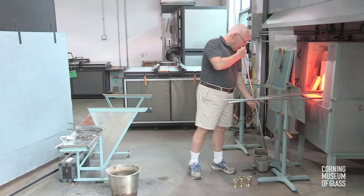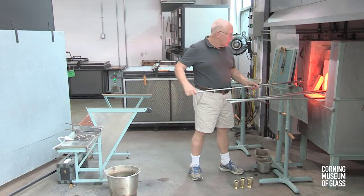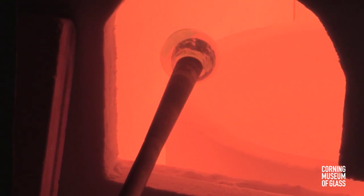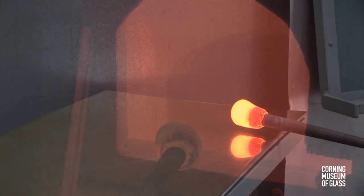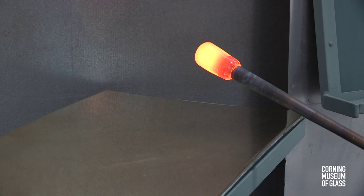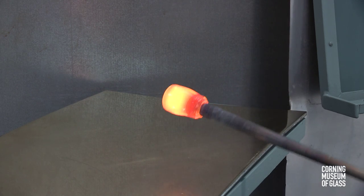The process begins with a gather of glass on the end of a metal blowpipe. The glass is rolled back and forth on the marver to make the glass perfectly round and concentric.